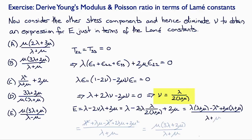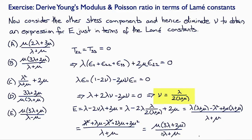We cancel the 2's here and multiply through by (lambda plus mu). The lambda squared terms cancel, so we get lambda squared plus lambda mu minus lambda squared plus 2 lambda mu plus 2 mu squared, over (lambda plus mu). This simplifies to mu times (3 lambda plus 2 mu) divided by (lambda plus mu), which is answer B.